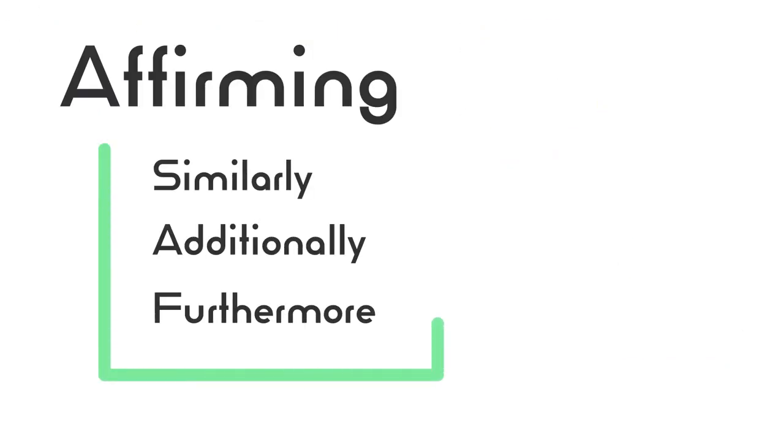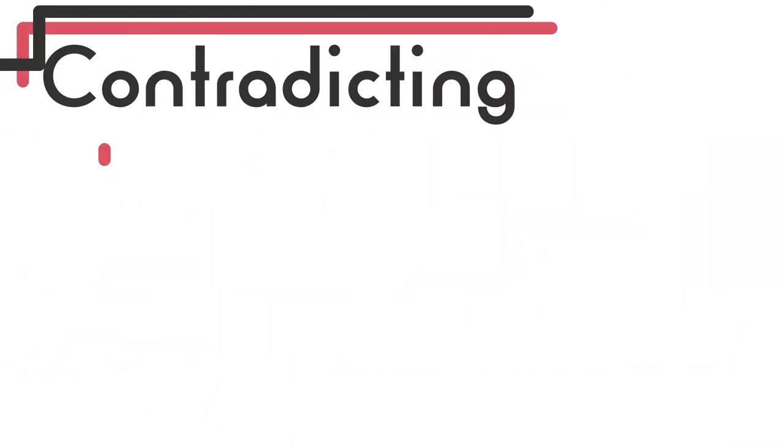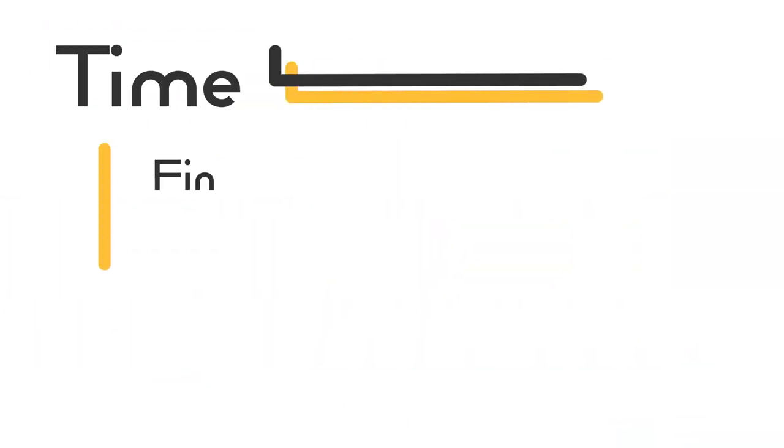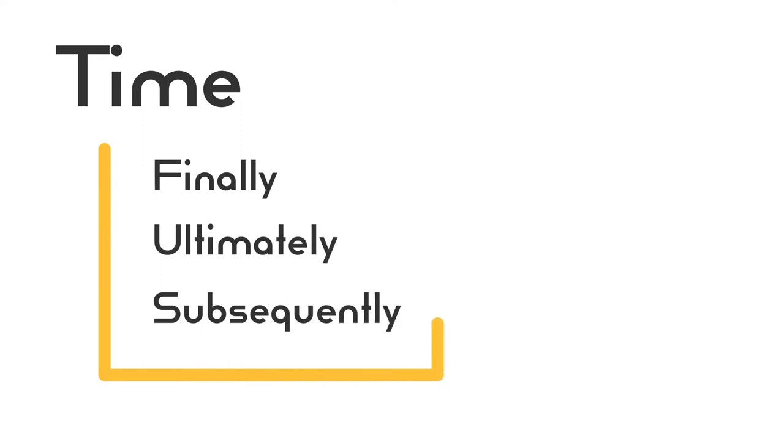Our first category is affirmative. These are words that say: here's an idea, and here's another idea that follows it — these ideas sort of agree. Here's more information, an affirmation of this idea. Then we have contradictory ones — here's an idea and here's an idea that opposes it. It would be like saying, "I like going to the store, but I never go shopping" — it's a contradiction. And the last one is time-based words: transition words that indicate some type of time.